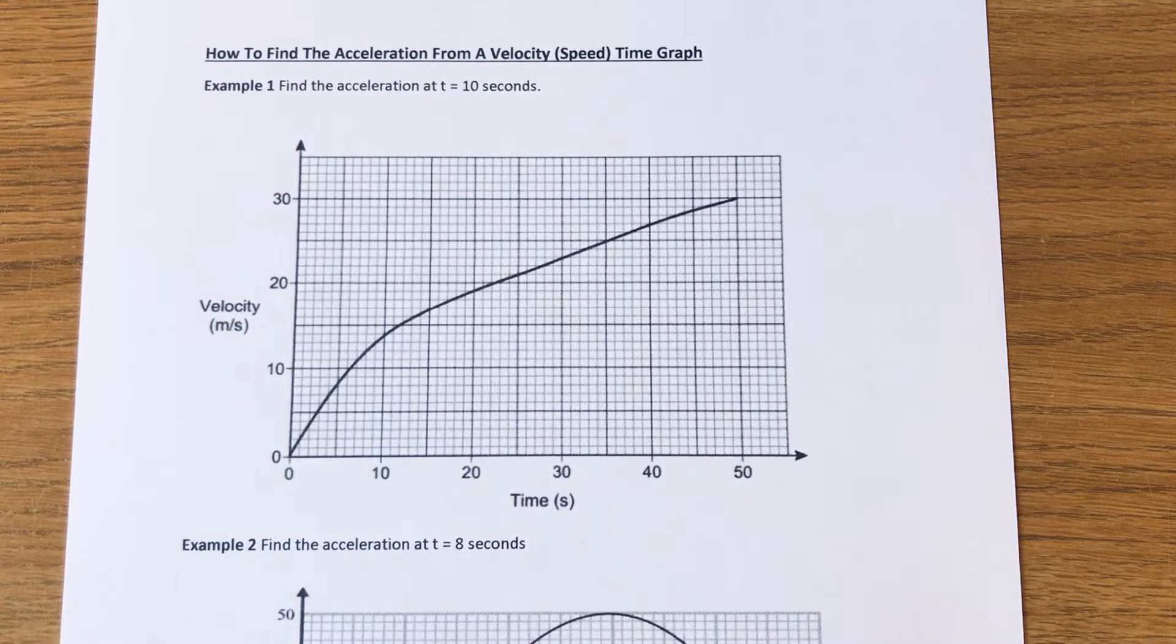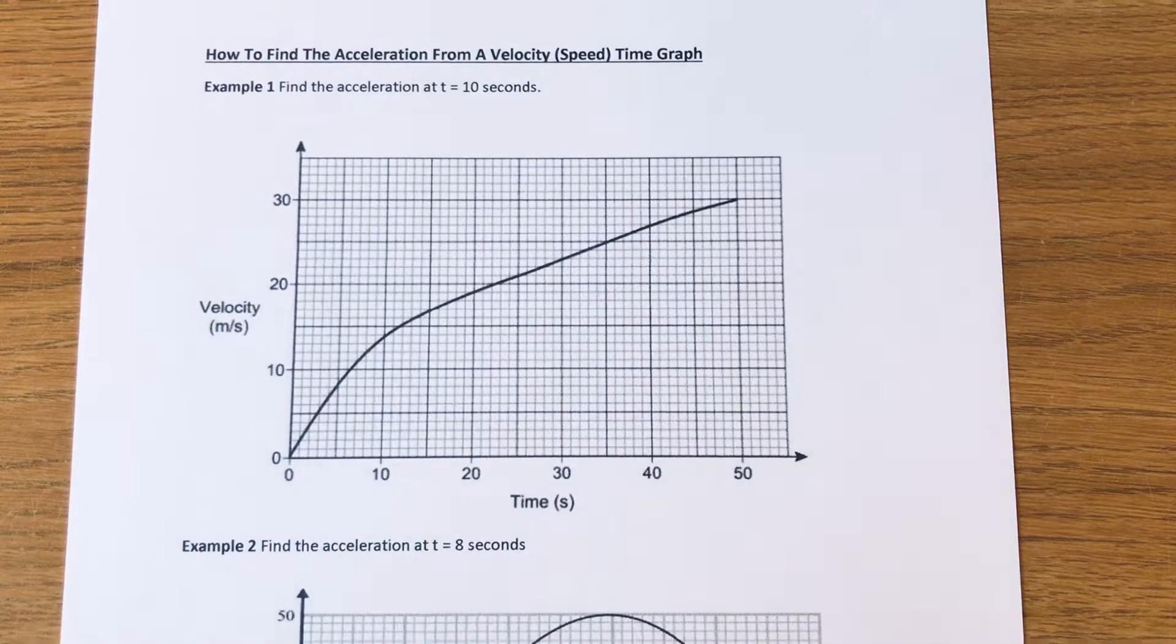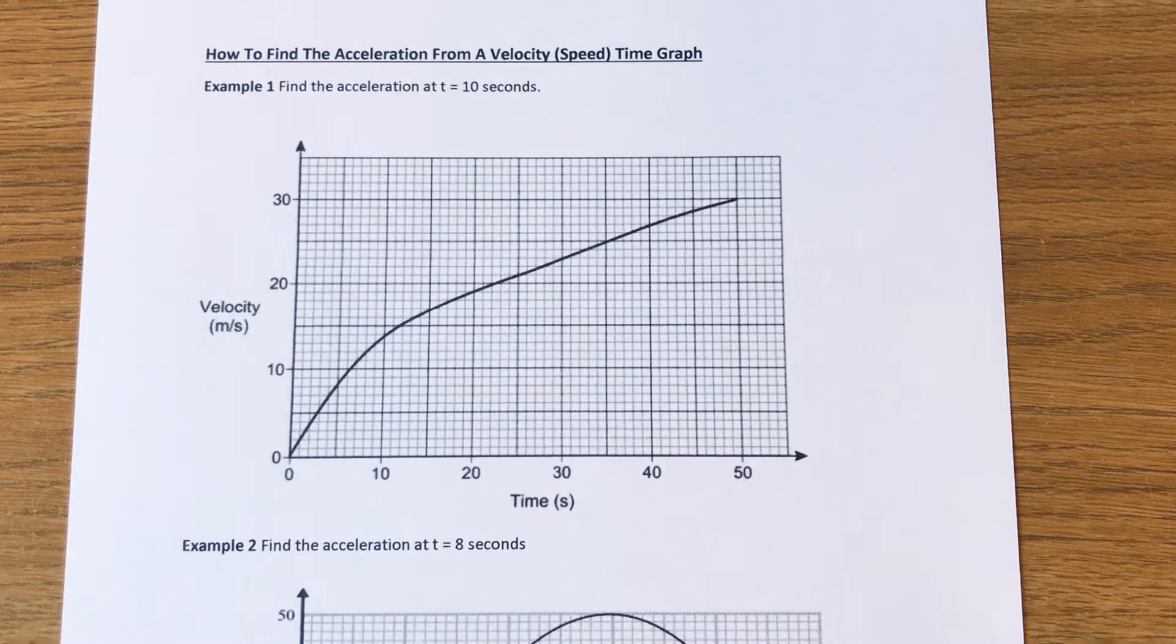Now to do this you need to do a tangent at the point on the graph you're finding the acceleration. A tangent is a line which just touches the edge of the curve at that point.